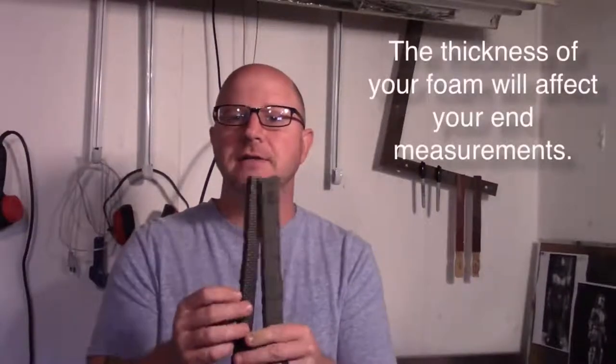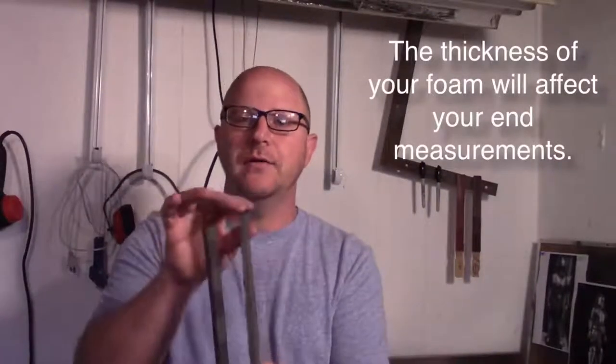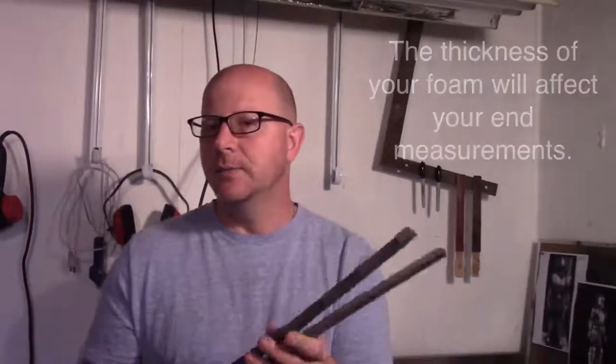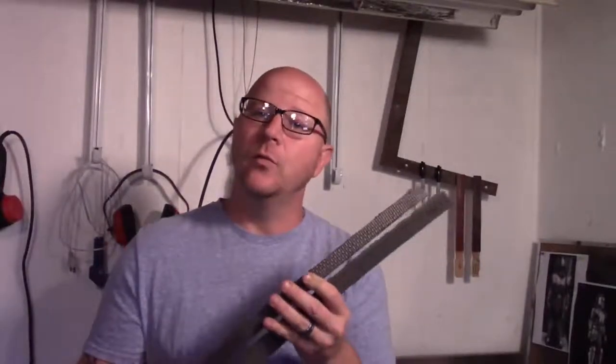But we're going to take it a step further and show you how to make a different type of foam ruler which has thickness to it. We have a quarter inch and a half inch thickness and these will help us compensate for the thickness of the foam when we're taking measurements. And that way when your measurements are noted, it will be accurate, and your pieces will fit every time.